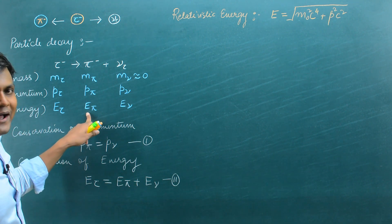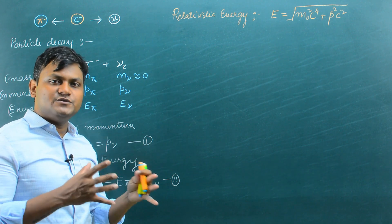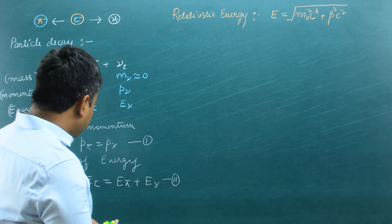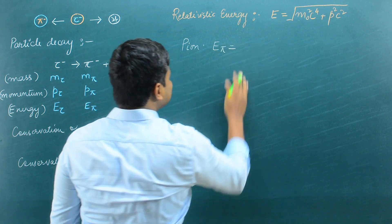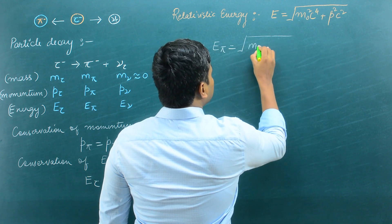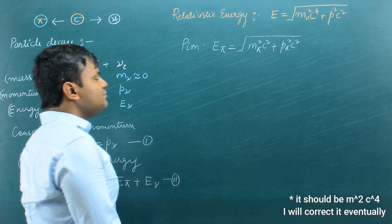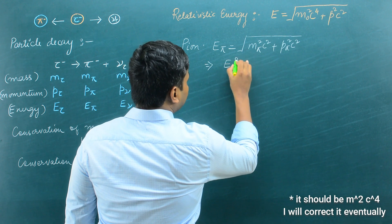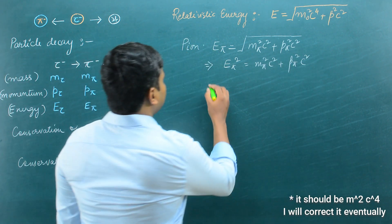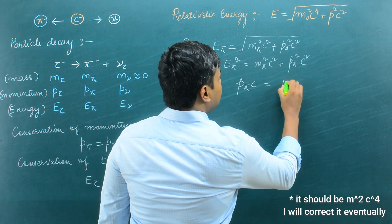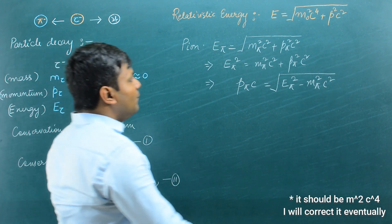We want the energy of the pion in terms of the masses of the particles. For the pion, E_pi equals the square root of (m_pi squared c to the power 4 plus p_pi squared c squared) — call this point number three. Now, applying the energy conservation expression E_tau equals E_pi plus E_nu: since the neutrino is approximately massless, when rest mass is zero the expression reduces to E equals p c, so E_nu equals p_nu times c. By point number one, p_nu equals p_pi, so we can substitute p_pi c for E_nu.